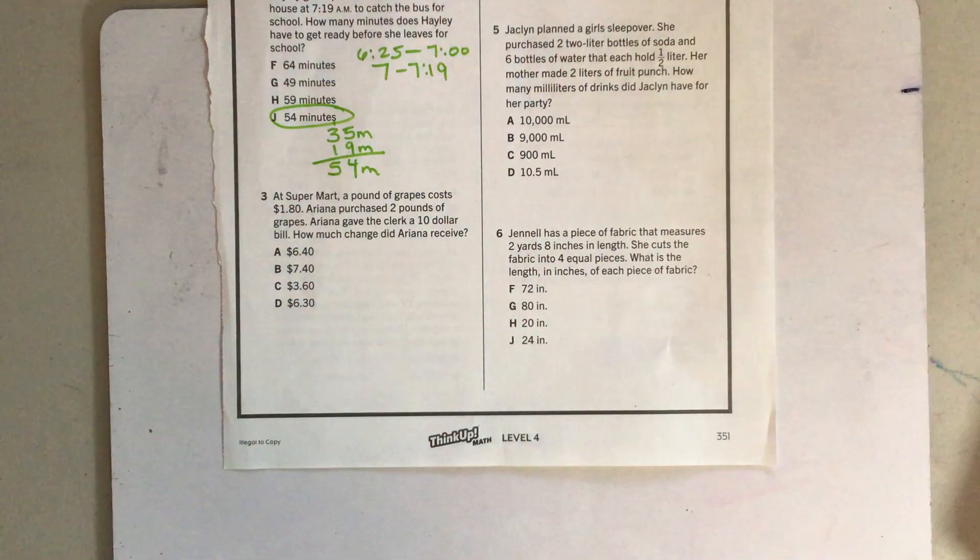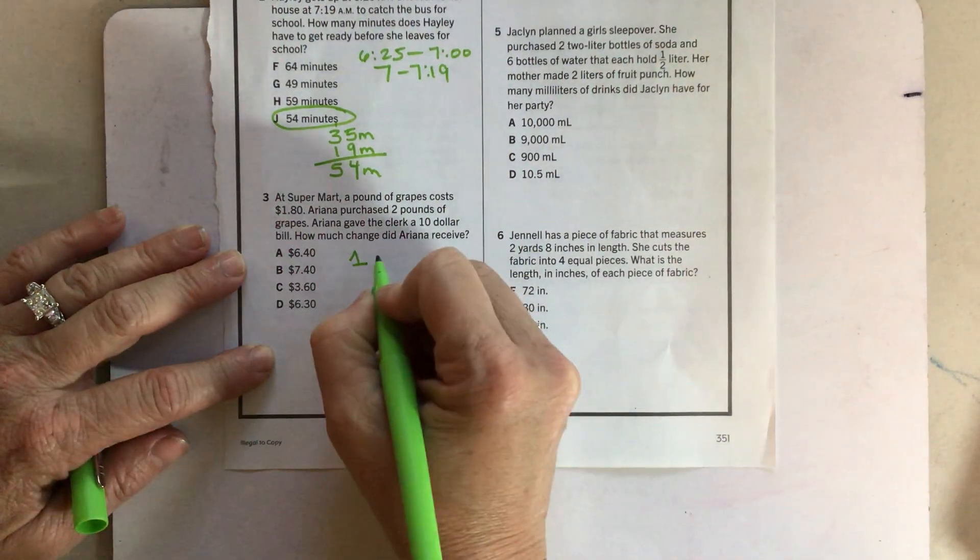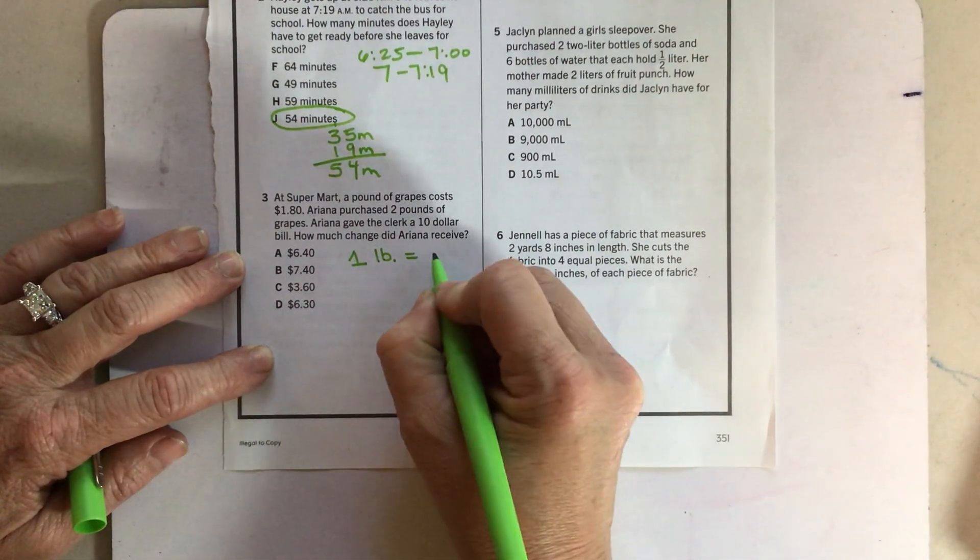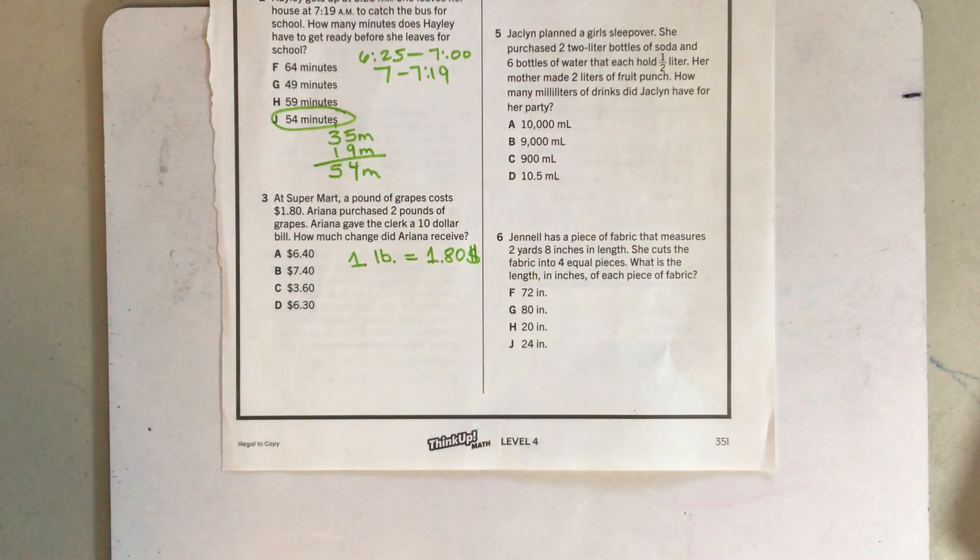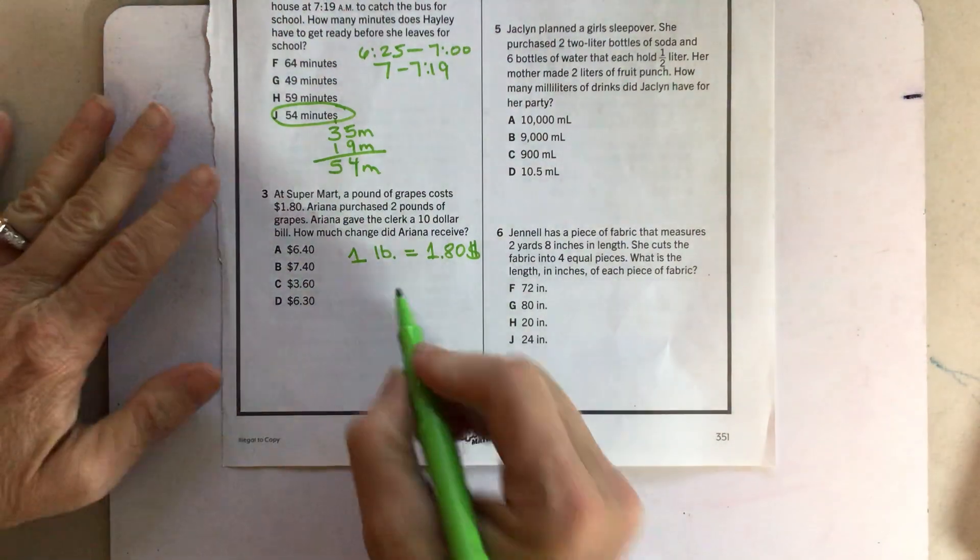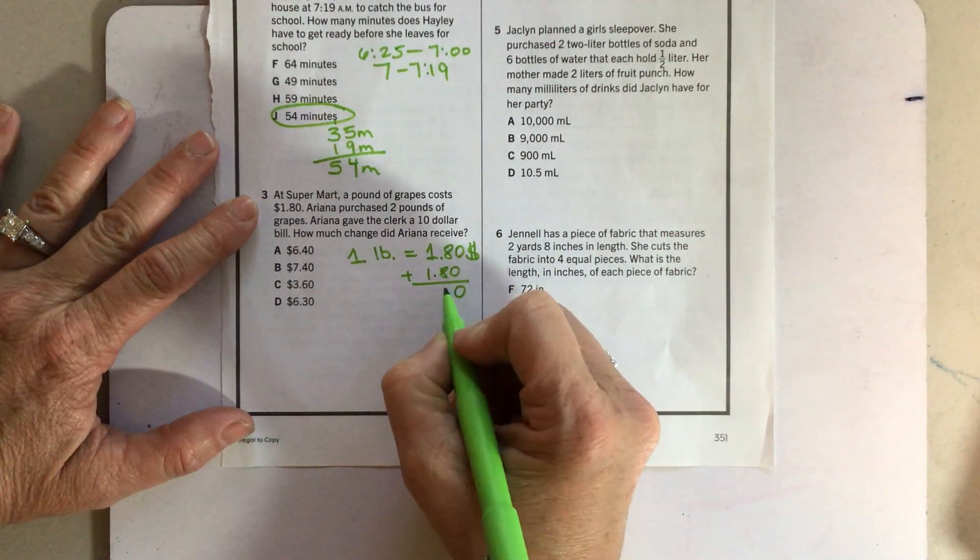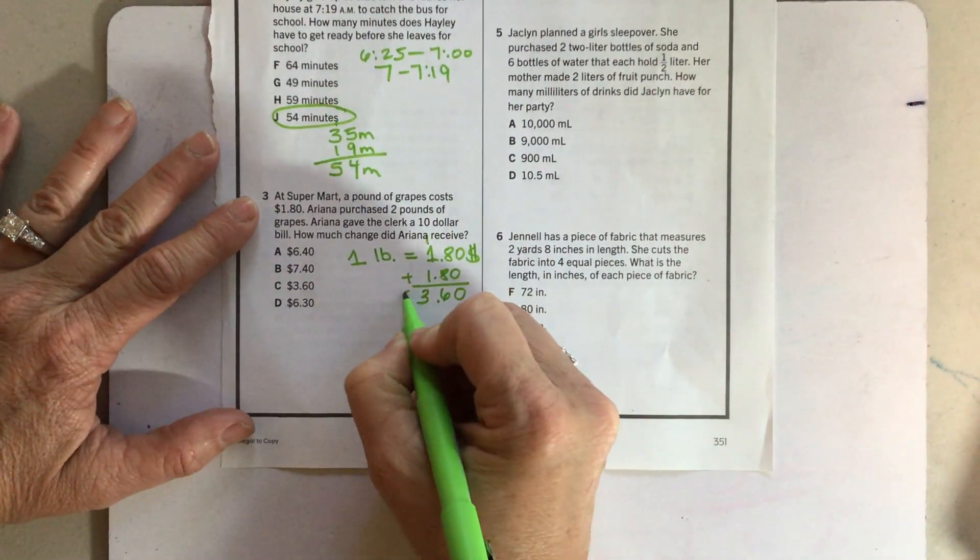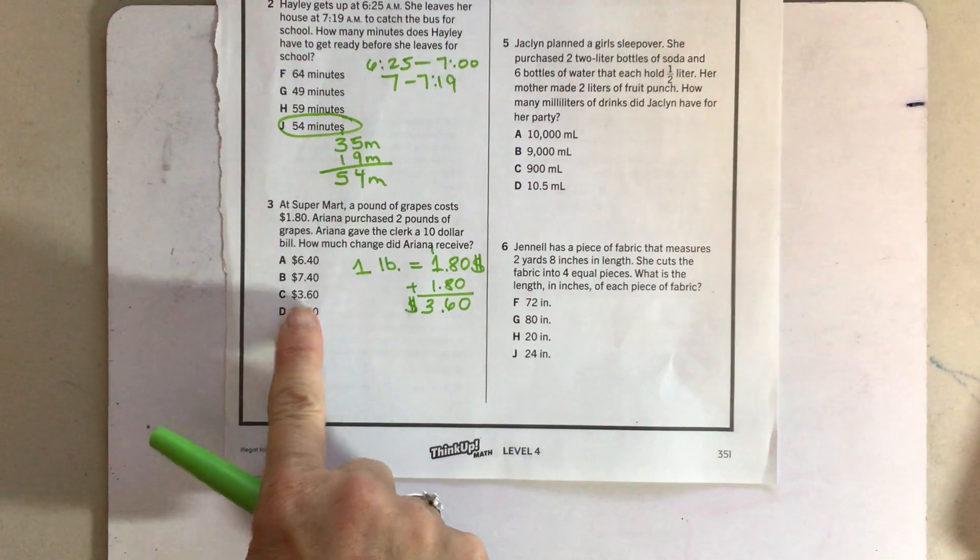Going to a supermarket. A pound of grapes costs $1.80. The abbreviation for pound is actually LB. So one pound equals $1.80. That's actually pretty cheap. Grapes are usually expensive. Ariana purchased two pounds of grapes. So one pound is $1.80. So two pounds, you just got to do $1.80 plus $1.80. So $3.60 is what she is going to spend on two pounds of grapes.